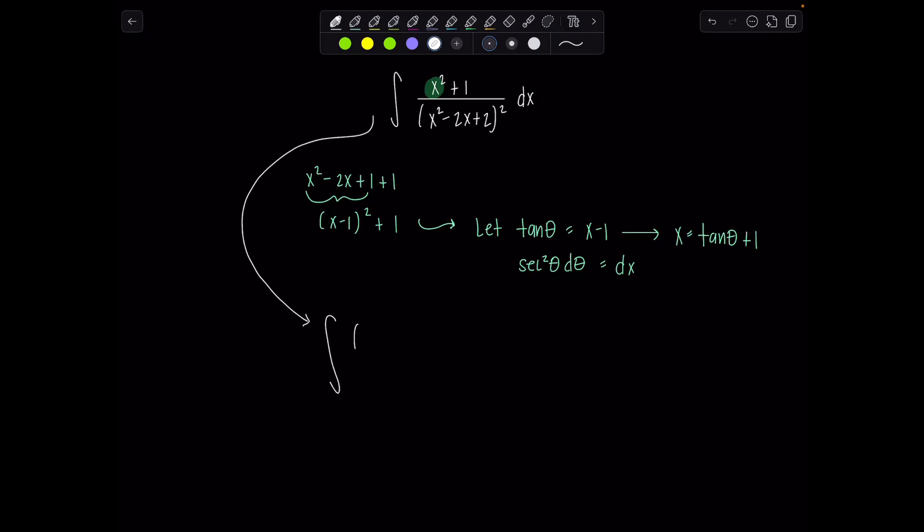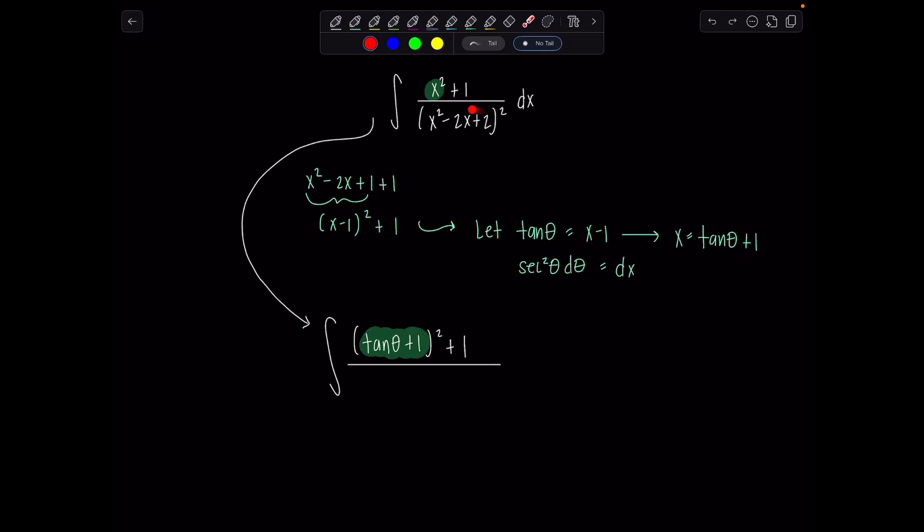So I'm going to come through and replace this x right here with tangent theta plus 1 and square the whole thing. So we have integral tangent theta plus 1 squared plus 1. That's all up top in the numerator. Now looking at the denominator, remember we completed the square, so it became x minus 1 squared plus 1. This is just going to be tangent theta squared plus 1, and then all of that gets squared. So that's my new denominator. And then what about dx? dx is all of this, secant squared theta d theta.